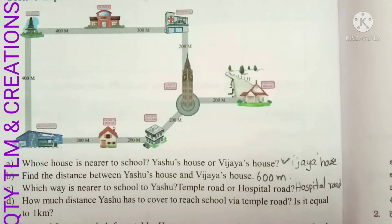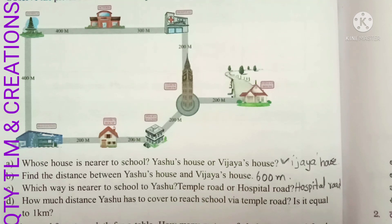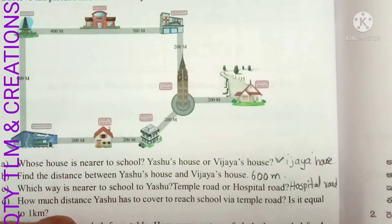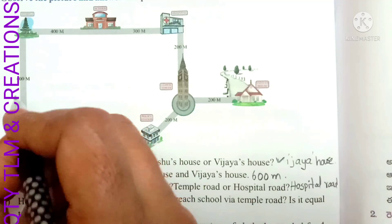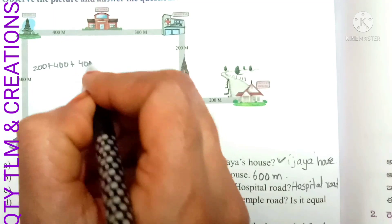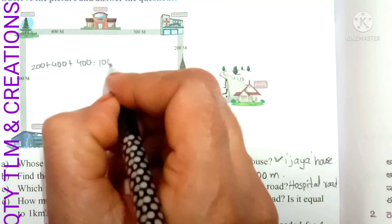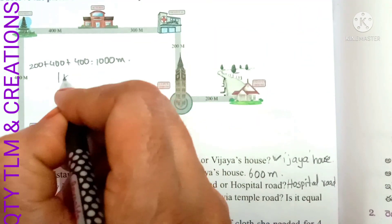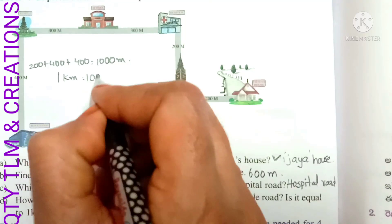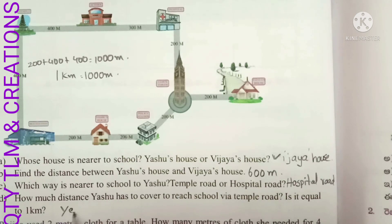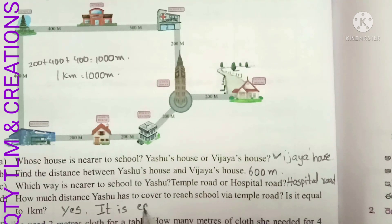Next question: how much distance does Yeshu have to cover to reach school via temple road, and is it equal to one kilometer? Yeshu goes via temple road covering 200 plus 400 plus 400, which equals 1000 meters. Yes, it is equal to one kilometer.